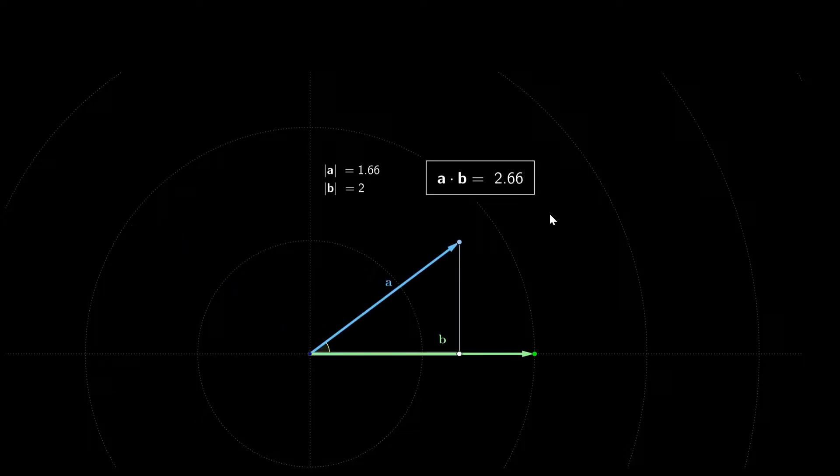Also notice that the dot product doesn't care about the order in which you do the operation. For example, if we swap the positions of a and b, the dot product will still be 2.66.